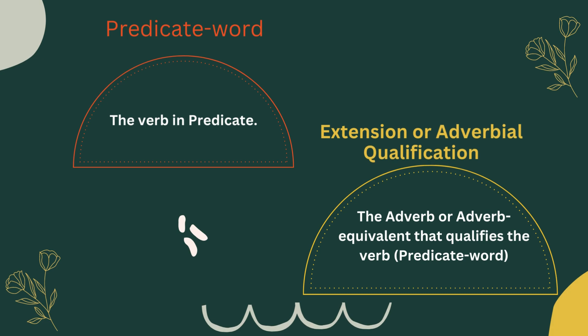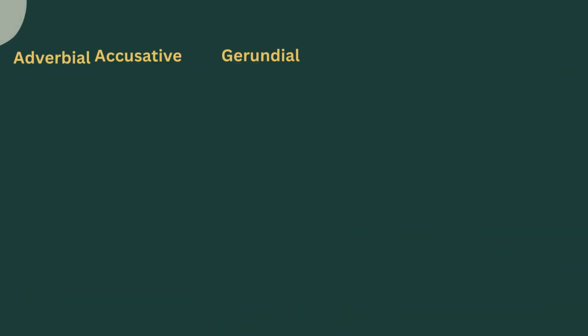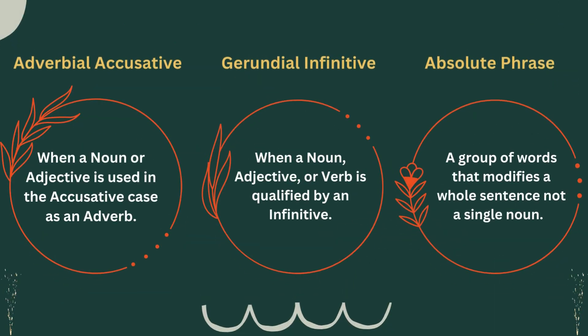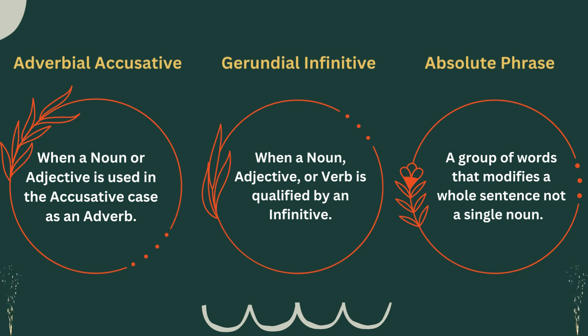The very first definition is: what is the predicate word? Number two: extension or adverbial qualification — both are the same. Please have a look at the definition of these two things. And again, you have three more definitions to focus on: the first one is adverbial accusative, number two gerundial infinitive,